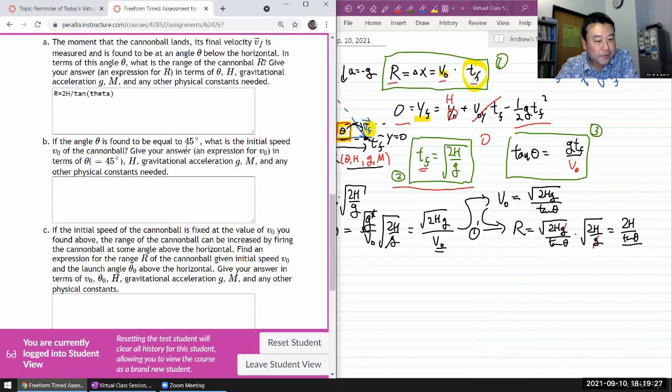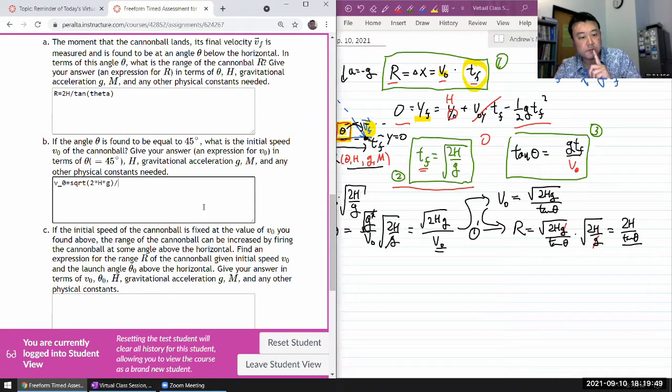If the angle theta is found to be equal to 45 degrees, what is the initial speed V naught? I think I've done that before. So V naught in terms of H. I have that V naught is equal to square root of two times H times G divided by tangent theta. If it's 45 degrees, tangent theta is one. I don't need that. And the rest are in terms of the variables I'm allowed to use.